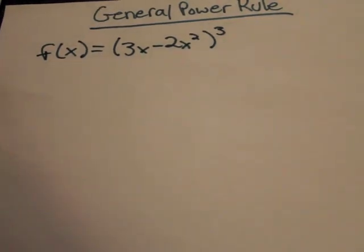Now, here's where the general power rule and the chain rule are similar. You take the derivative of the outside function, multiply it by the inside function, and multiply it by the derivative of the inside function.